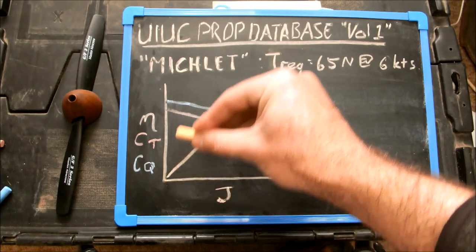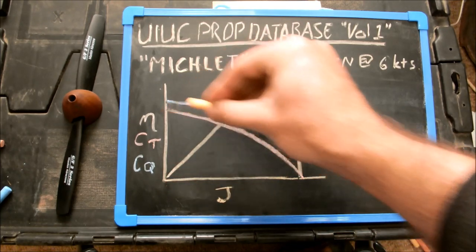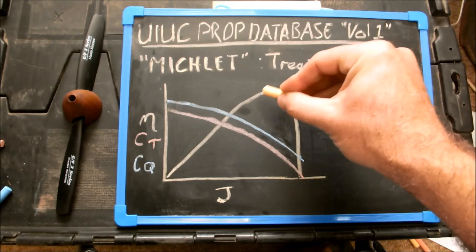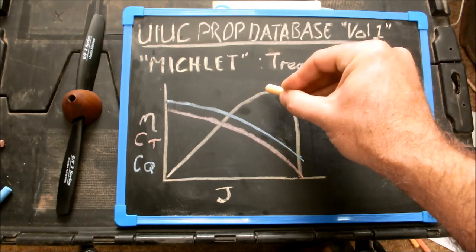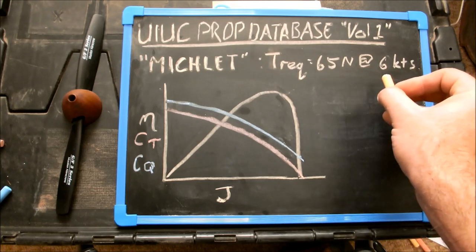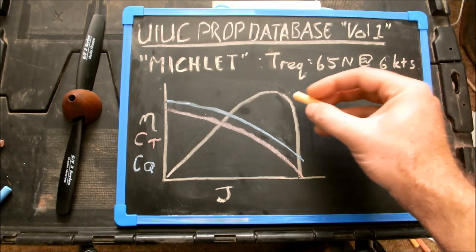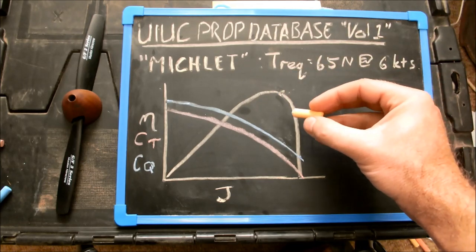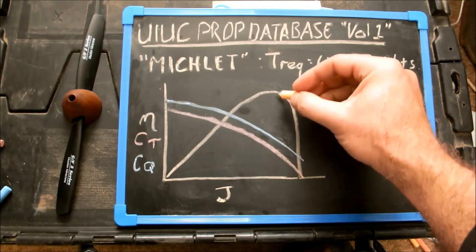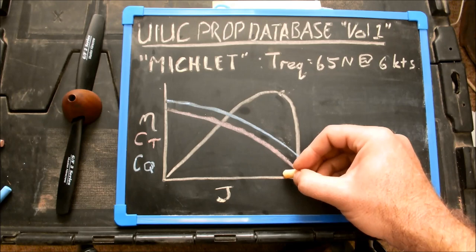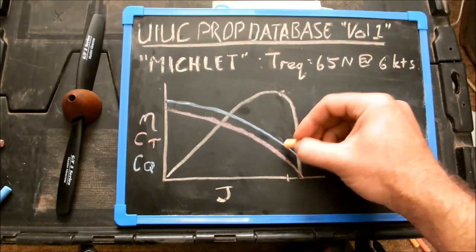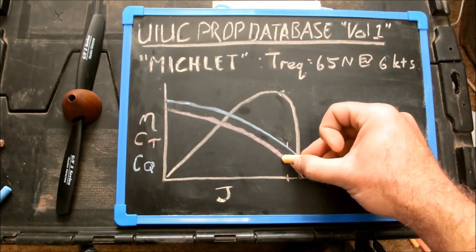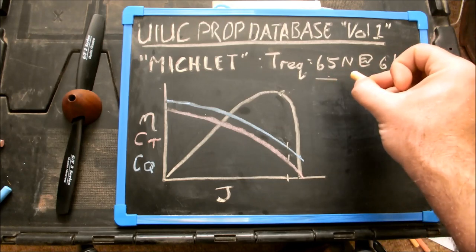So at zero boat speed you've got maximum thrust coefficient, zero efficiency. And then as boat speed picks up, eventually your propeller would reach a point at which it runs at maximum efficiency. Knowing the required thrust at a specific boat speed, I was able to calculate exactly where on these curves my propeller was operating. It happened that the efficiency was just beyond maximum efficiency. And then reading off from the same value of advance ratio, I could get the torque coefficient as well as verifying that the thrust is exactly the required thrust.